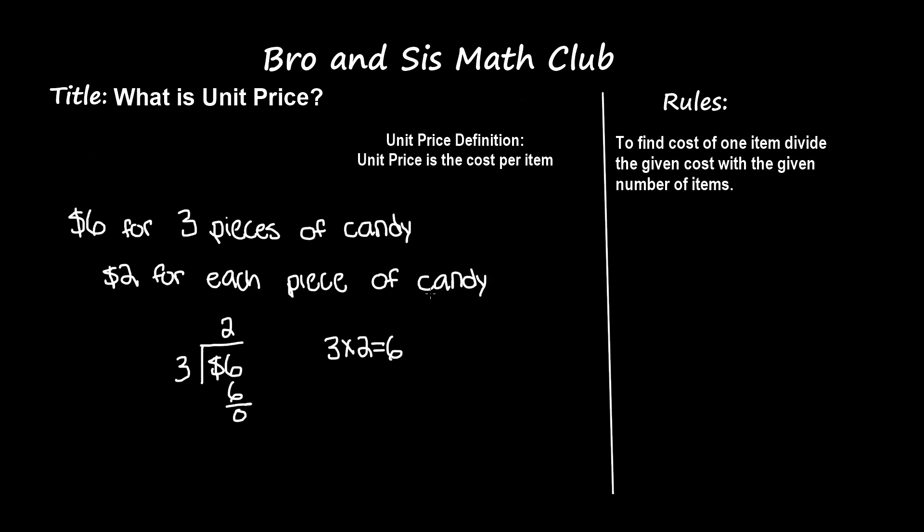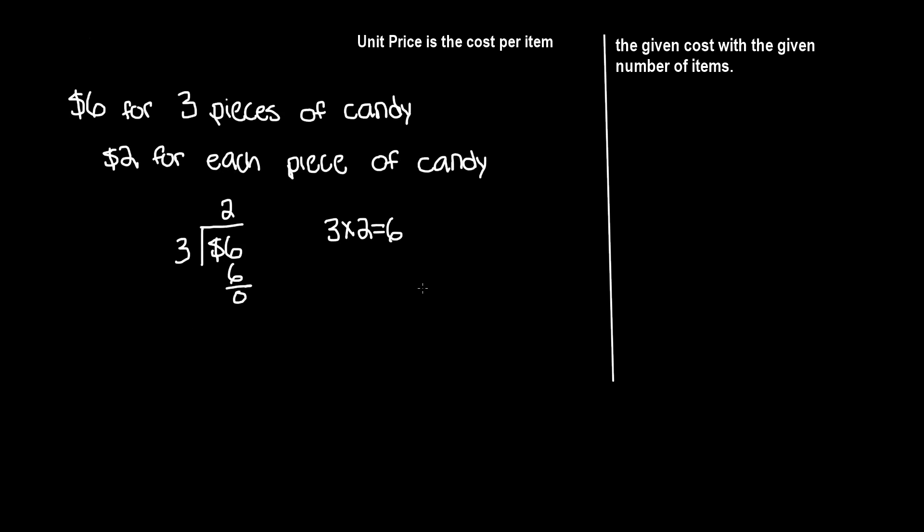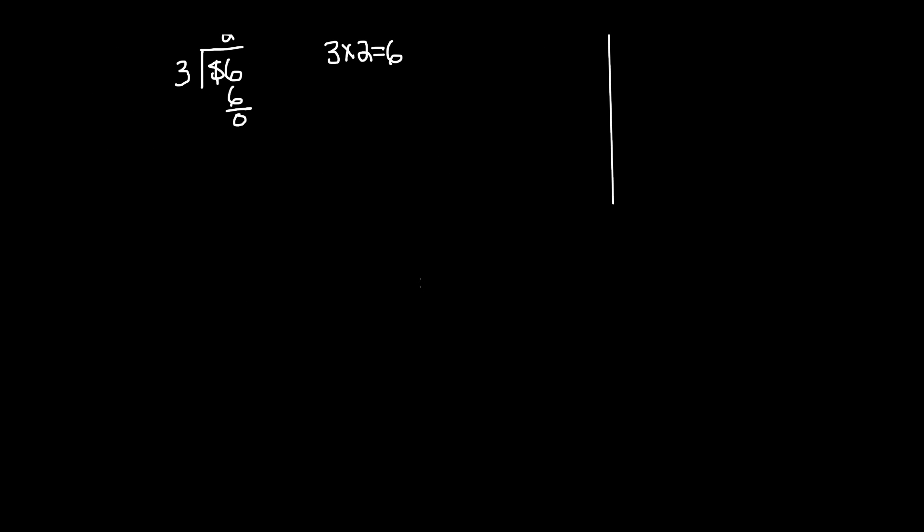Okay, so this is how you find unit price. Now let's do another example. Let's say I go to the store and it's five dollars for each piece of candy. So it's five dollars for each